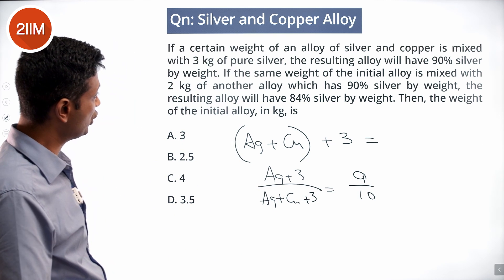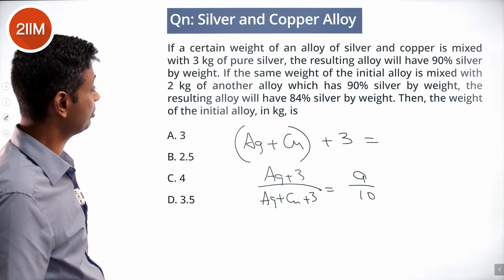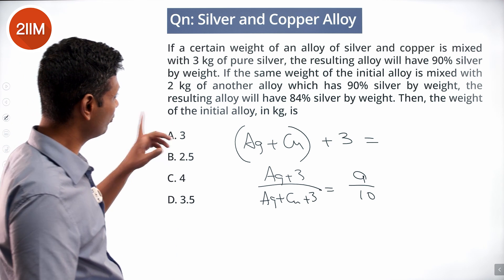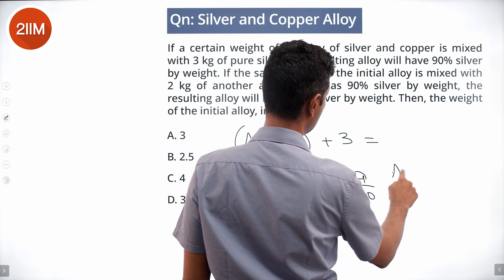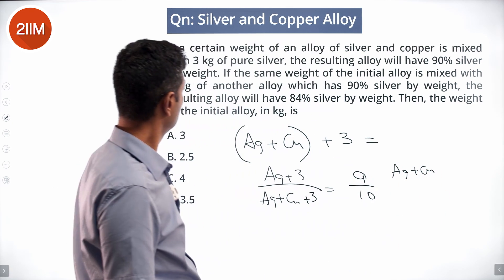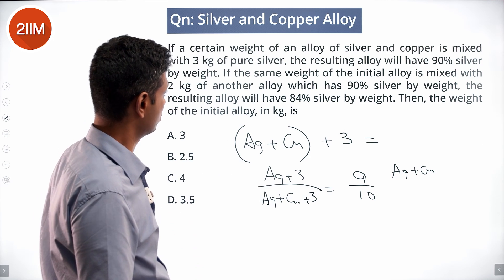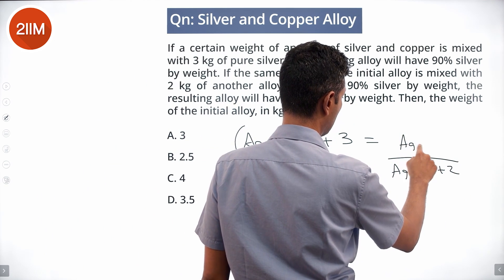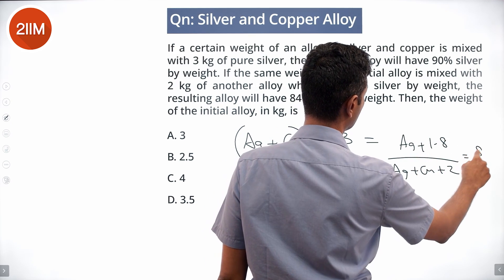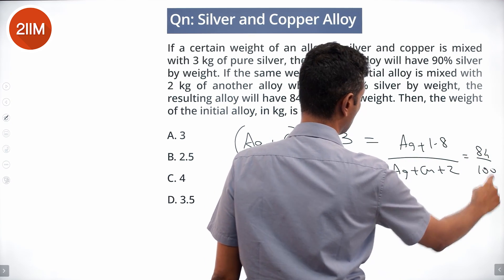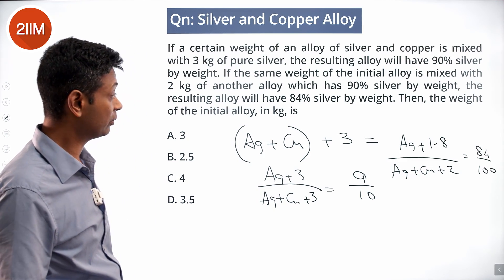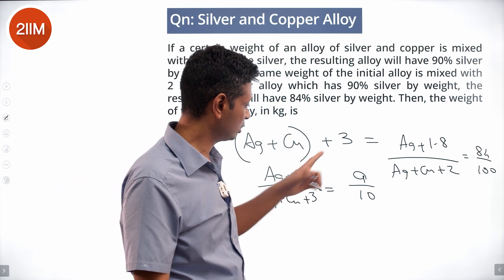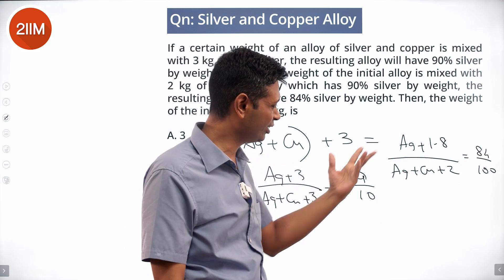The same weight of the initial alloy is mixed with 2 kg of another alloy which has 80% silver by weight, and the resulting alloy will have 84% silver by weight. So: (Ag + 1.8) / (Ag + Cu + 2) = 84/100. We solve these two equations to get silver and copper weights.